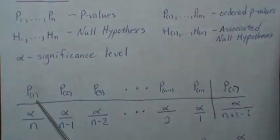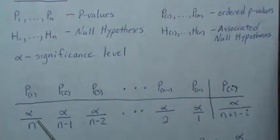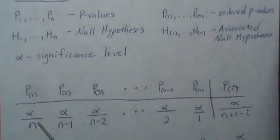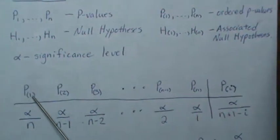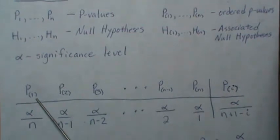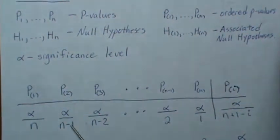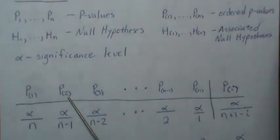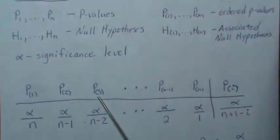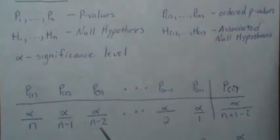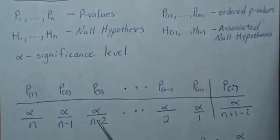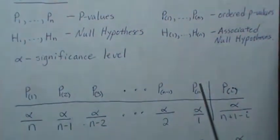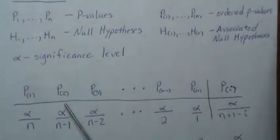So now the procedure says: if this p-value is smaller than that threshold, reject H1 — the hypothesis associated with that — and move on. If the next p-value is smaller than its threshold, reject the hypothesis associated with that p-value. You keep going until you can't. For instance, if a p-value is not smaller than its significance level, we do not reject that hypothesis and we stop.